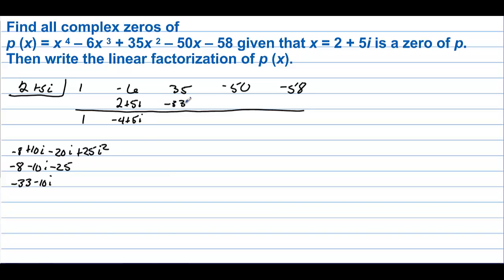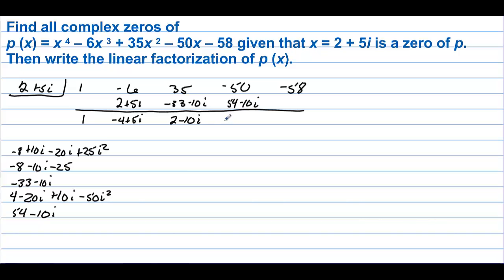This becomes 2 minus 10i. Multiplying (2 plus 5i)(2 minus 10i): we get 4 minus 20i plus 10i minus 50i squared, which is 4 minus 10i plus 50, giving 54 minus 10i. Adding to get the next step, we have 4 minus 10i. Multiplying again: 2 times 4 is 8, minus 20i plus 20i, and minus 50i squared equals plus 50, giving 58. The 20i terms cancel, and the remainder is 0, confirming 2 plus 5i is truly a zero.